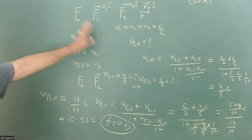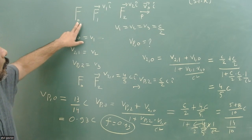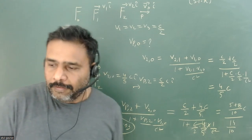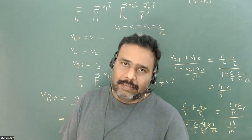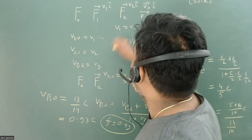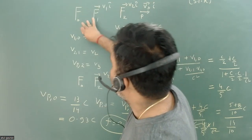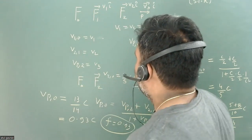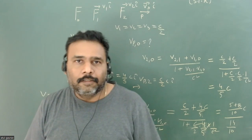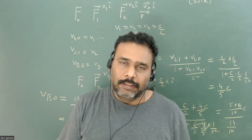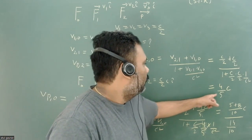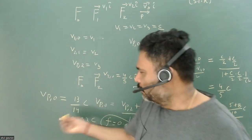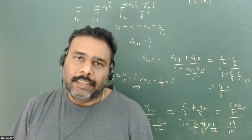The catch is simple: first calculate the velocity of F2 with respect to F0, then apply the relativistic addition formula again for the particle. We always work with two frames at a time — S, S-dash, and the particle. After the first step, F1's role is gone and we solve the reduced problem. This is a very fundamental and nice problem. The velocity of F2 w.r.t. F0 is 4c/5, and with correct calculation the final answer is 13c/14 ≈ 0.93c.